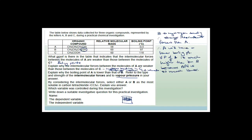By considering the intermolecular forces, select either A or B as the most soluble in carbon tetrachloride and explain your answer. Carbon tetrachloride has a carbon with four chlorines — it is definitely nonpolar because no matter which direction you look, you see chlorines. A has weak van der Waals forces whereas B has hydrogen bonding, so the one that will dissolve in this nonpolar solvent is definitely A.